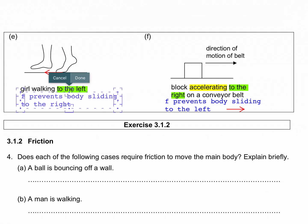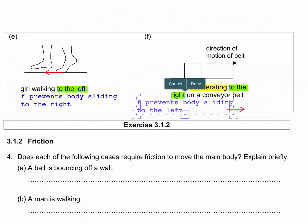Example f: A block is accelerating to the right on a conveyor belt. The conveyor belt is moving towards the right. If there was no friction, the block would stay at rest, meaning it is actually moving to the left relative to the belt. To prevent the block from sliding, friction will have to act towards the right.